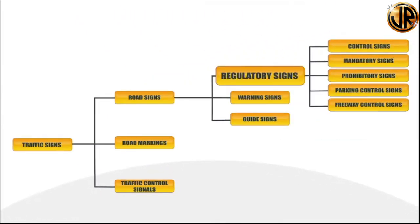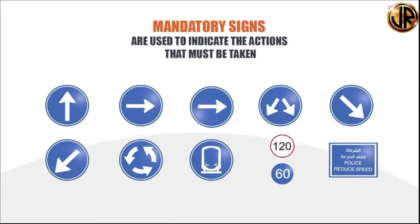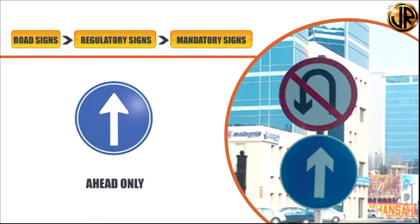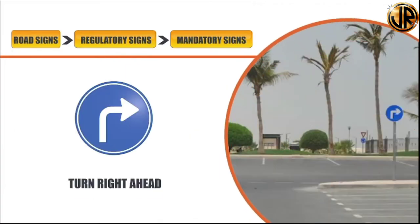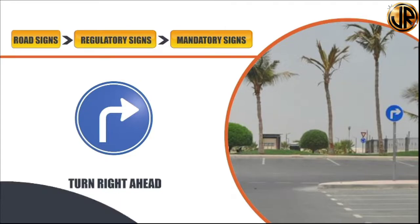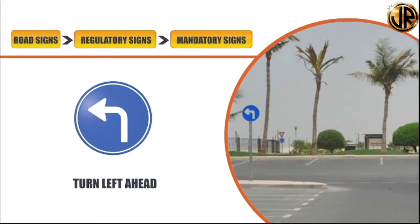Mandatory signs are used to indicate the actions that must be taken. All permanent mandatory signs have blue backgrounds and are mostly circular in shape. A 'head-only' sign instructs that motorists must go straight ahead only — they must not make a U-turn, turn right or turn left, but must continue driving straight. Motorists are not allowed to park in such areas. The 'turn right ahead' sign means motorists must turn right ahead; it is used on minor roads to alert motorists in advance that there is a one-way road ahead. If the arrow is reversed pointing to the left, you must turn left ahead.